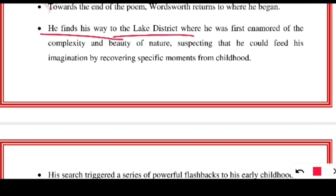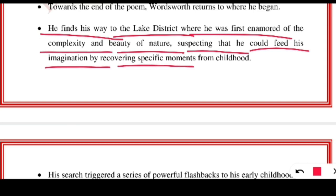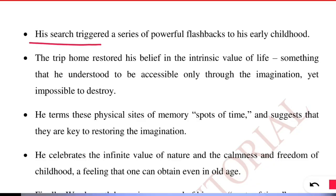He finds his way to the Lake District where he was first enamored of the complexity and beauty of nature, suspecting that he could feed his imagination by recovering specific moments from childhood. Being back in nature, Wordsworth understood that without nature nothing can be possible — without it we will have complexes, self-doubt, and no healthy relationships, as everybody is selfish. The poet wants us to understand that nature is the prime solution to all problems of human beings.